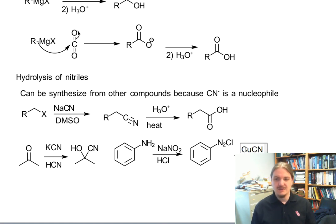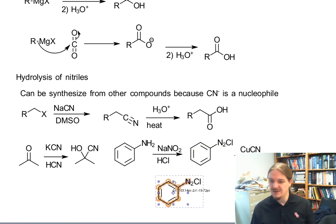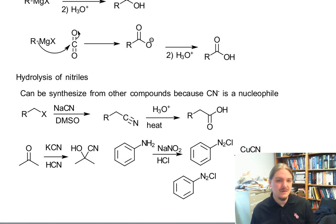So this diazonium salt can react with copper cyanide to make benzonitrile. They're not the only way to make benzonitrile, but it is a way to make benzonitrile. And I'm going to actually put this down here so it is not hiding behind my head.